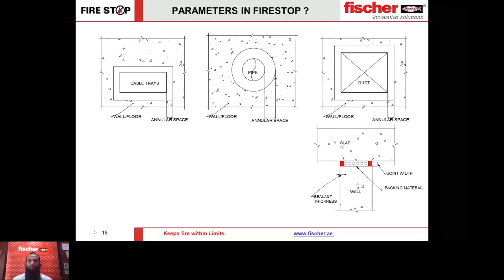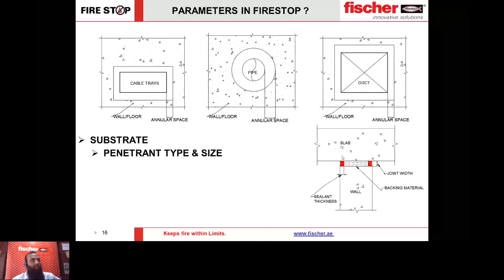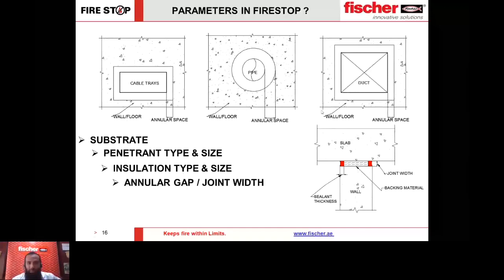Some important points to remember: fire stopping always depends on the substrate — what is the floor or wall made of, is it gypsum drywall, concrete, or block wall, and what is its rating? Then: what is the penetrant type, what is the penetrant size? What is the insulation on top of the service — its type and size? And very importantly, the annular gap — the gap between the service and the opening. Then there is joint width and the backing material used.